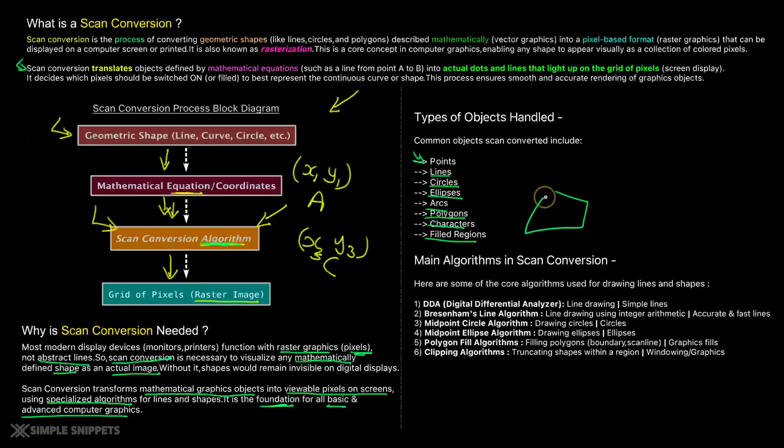So for example, you have a box and you want to completely fill it with a certain color. You want to color this entire box. So that is basically filled regions. We'll come across them as you proceed. And what are the different algorithms?